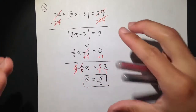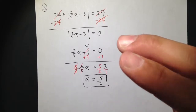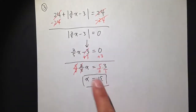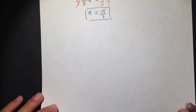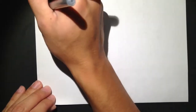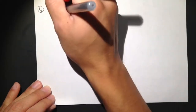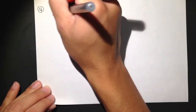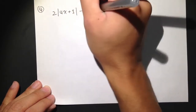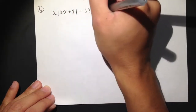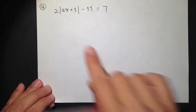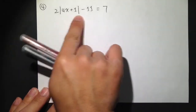This is an example of an absolute value equation that has just one solution. Let's do number 4: we have 2 times the absolute value of 4x plus 1 minus 11 equals 7. Again, we have to isolate the absolute value first.